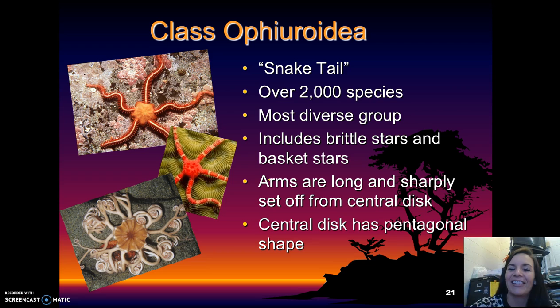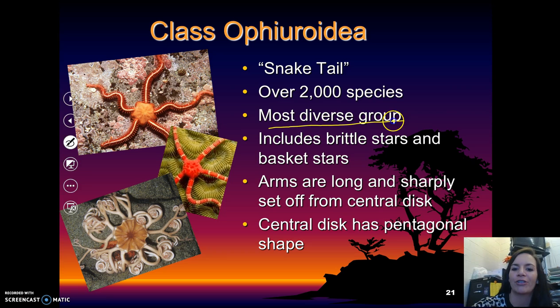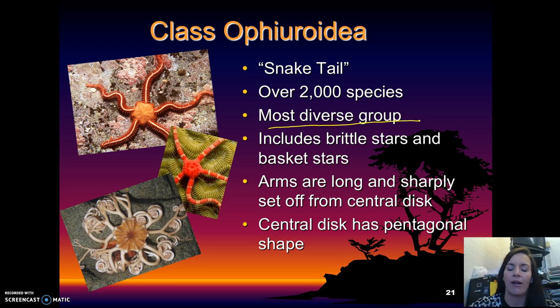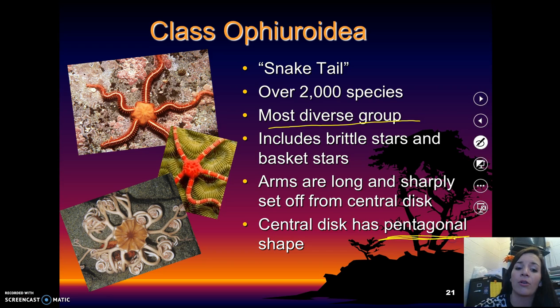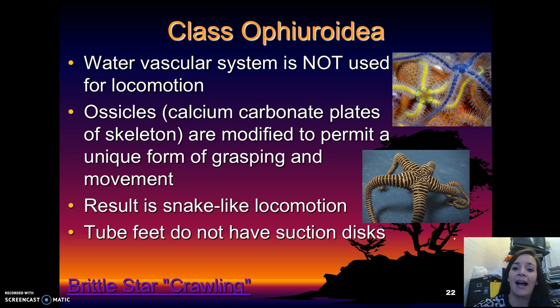The next class is Ophiuroidea, also known as snake tail. There are over 2,000 species, making them the most diverse group. It includes brittle stars and basket stars. Their arms are long and sharply set off from the central disc — not the even star shape seen in sea stars. The central disc also has a pentagonal shape. Their water vascular system is not used for locomotion, which is an important difference. Their calcium carbonate plates, known as ossicles, are modified to permit a unique form of grasping and movement.